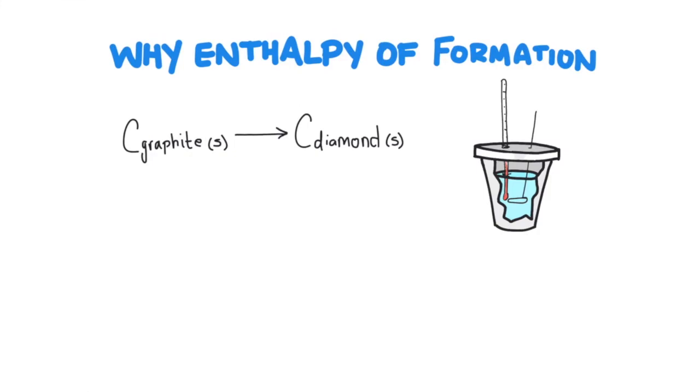There are reactions, however, that we can't perform in the lab, and so we can't directly measure the enthalpy. Like this reaction right here, when graphite turns into diamond. It's a really, really slow process, and so we can't experimentally and directly measure the enthalpy change. But we can determine the enthalpy change using an indirect method, and that's using enthalpy of formation.